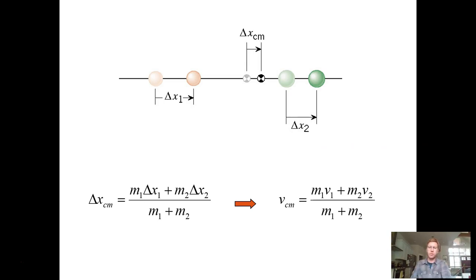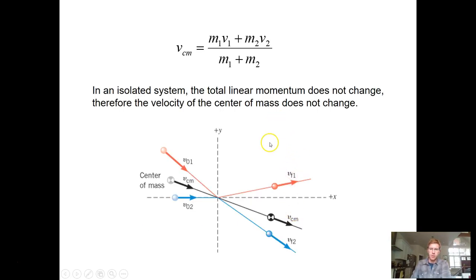The next thing I want to introduce is the velocity of the center of mass — the speed at which the center of mass of a system is moving. Its equation looks almost exactly like the center of mass equation, but with velocities. You can have multiple objects moving and colliding, and the velocity of the center of mass does not change in that situation, even though the two objects collide off one another.